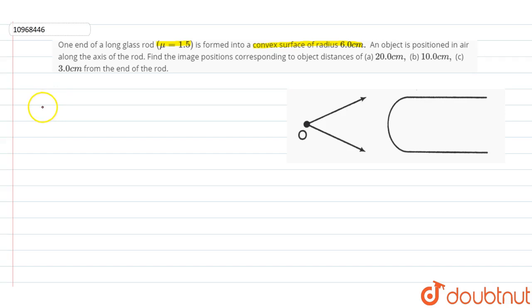We just need to use this formula. So, we know mu2 by v minus mu1 by u, that is equal to mu2 minus mu1 by r.